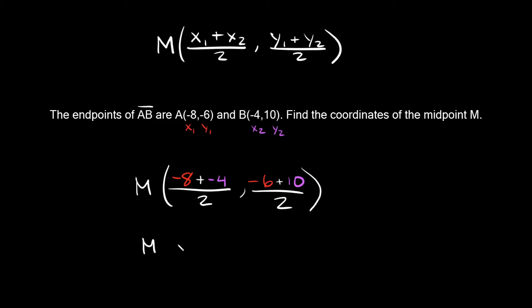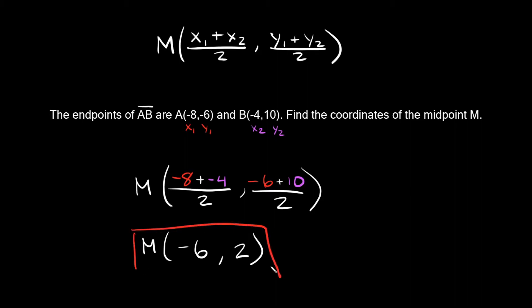Simplifying: on top we have negative 8 plus negative 4, that's equal to negative 12. Negative 12 divided by 2 is equal to negative 6 — that's our x coordinate. Then negative 6 plus 10 is equal to positive 4. Positive 4 divided by 2 is equal to positive 2. So your midpoint coordinate is at negative 6, comma 2.